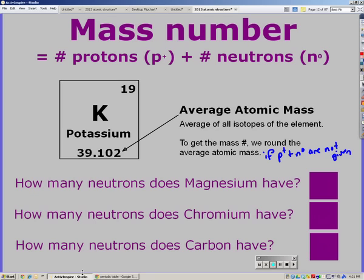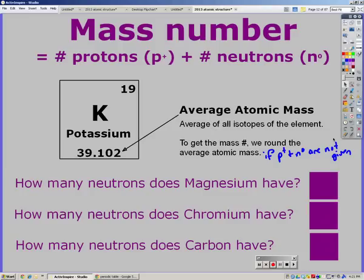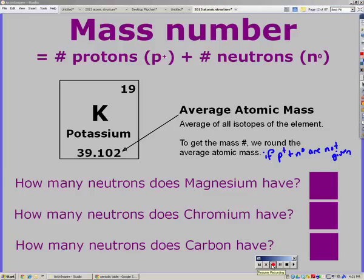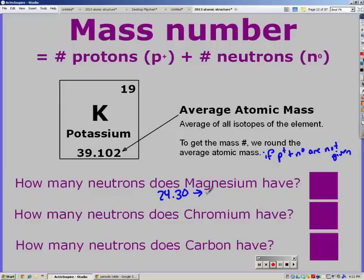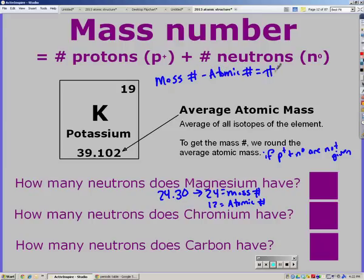So look on your periodic table and find magnesium's mass. Magnesium has a mass of 24.30, so we're going to round that to 24. That's our mass number. It has an atomic number of 12. So 24 minus 12 will give us our number of neutrons, because mass number minus atomic number equals neutrons.